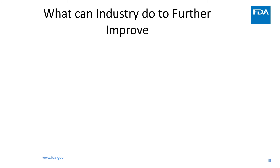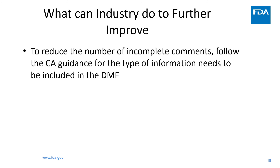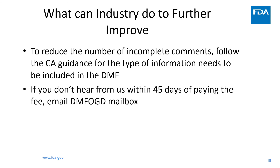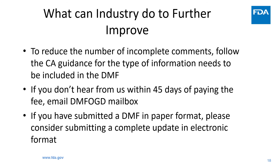Let me share a few things you can do to further improve this process. My colleague Ningzi shared the top 10 most common CA deficiencies and specific things missing in each. To reduce incomplete comments and increase first cycle completeness of DMFs, we ask you to follow CA guidance for industry to see which type of information needs to be included in each section of the DMF. A link to the final guidance published in October 2017 is provided on the next slide and on the FDA website. If you don't hear from us within 45 days of paying the GDUFA fee, please email the OGD mailbox — we are happy to let you know the status of your DMF. Finally, if you still have a paper DMF, please consider submitting a complete update in electronic format.